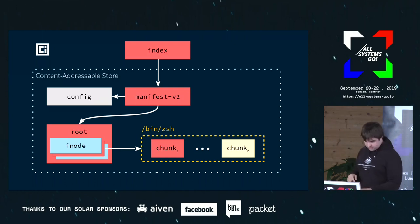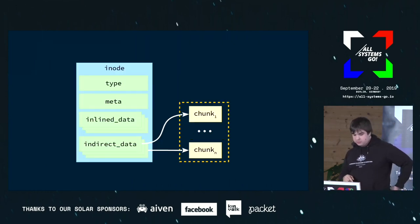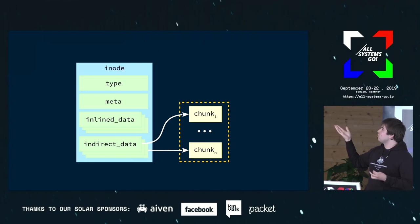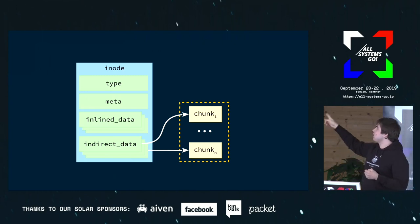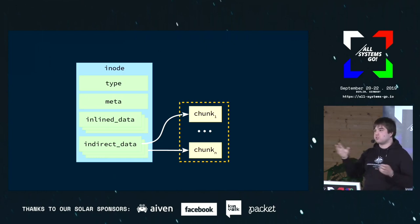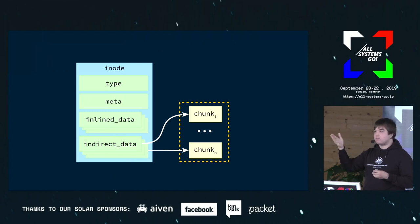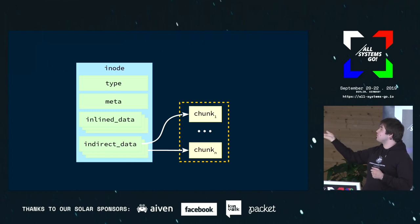Inside the inode structure, we have the type, metadata, and inline data. For inline data — things like symlinks — it wouldn't make sense to have an entirely new blob in the content-addressable store just to store a symlink target, so we inline it as a map of strings. The same applies to devices — you'd store the major and minor number. Indirect data is only used for files, and this is where you point to chunks inside the store.